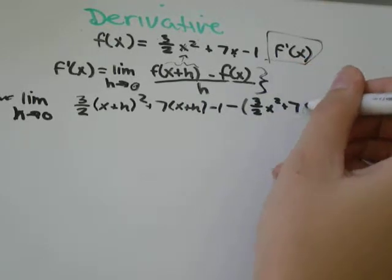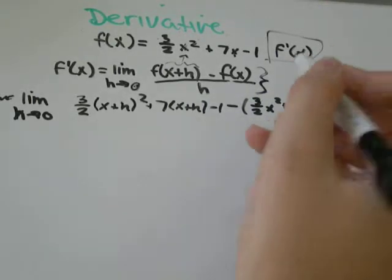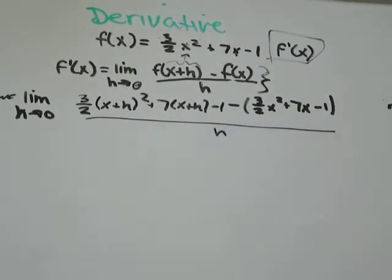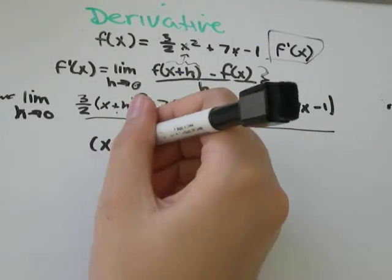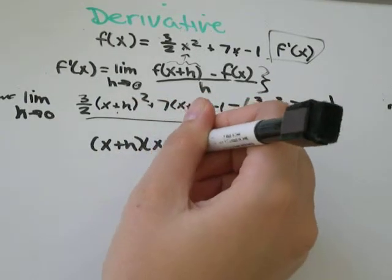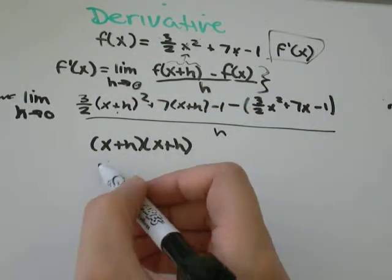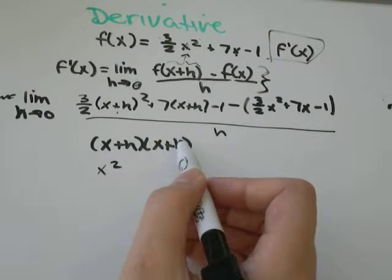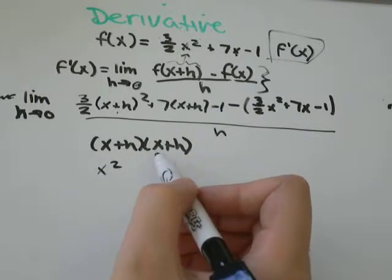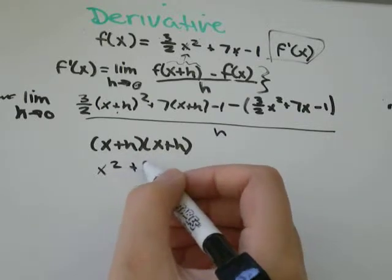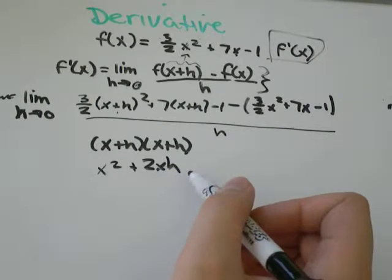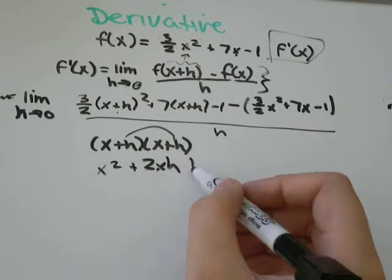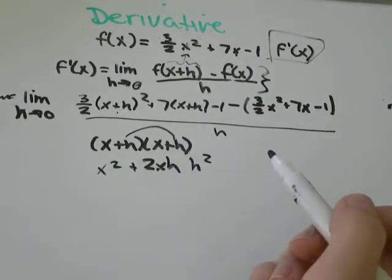So what we're going to do first is simplify x plus h squared. x plus h squared is the same as x plus h times x plus h. x times x is x squared, plus x times h, plus h times x. That's adding the same thing twice, so that's 2xh. It doesn't make a difference if you want to write it as hx instead. And then h times h would just be h squared.